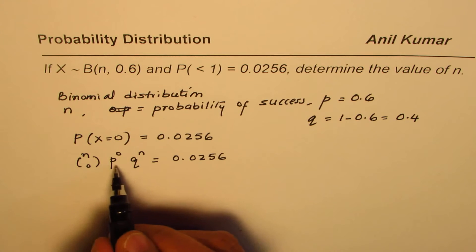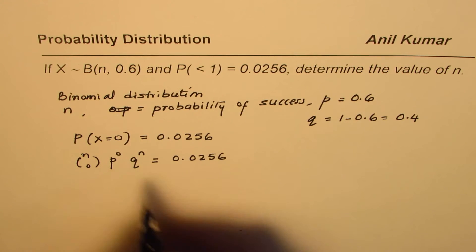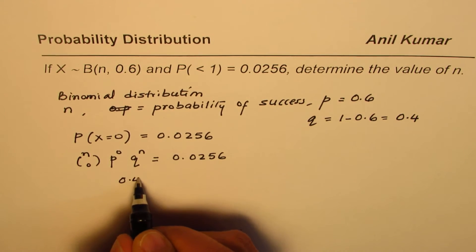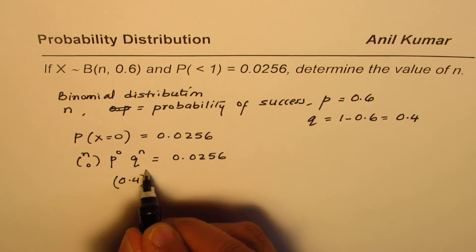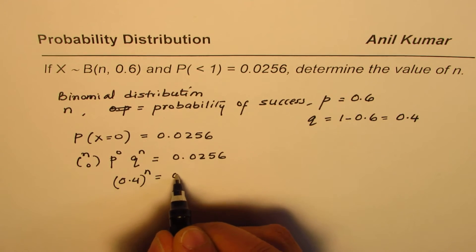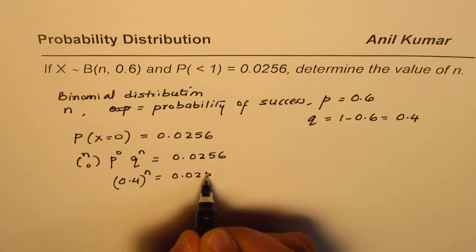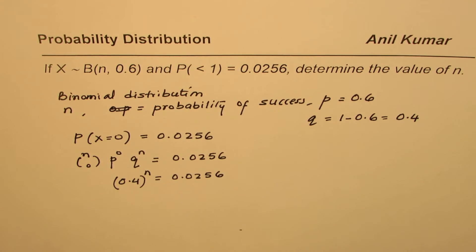Now, both these values are 1. q is 0.4, so we have 0.4 to the power of n equals to 0.0256.